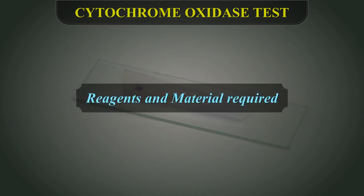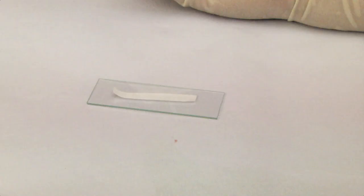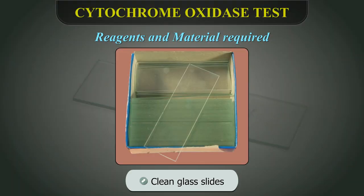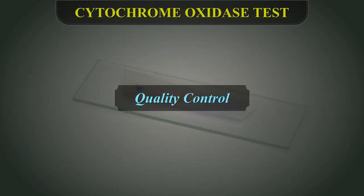Reagents and Material Required: Commercially available oxidase discs or filter paper strips dipped in freshly prepared oxidase reagent, tetramethyl-paraphenylene-diamine-dihydrochloride. Quality control: bacterial species showing positive and negative oxidase tests should be regularly tested to check the potency of the discs or the reagent.